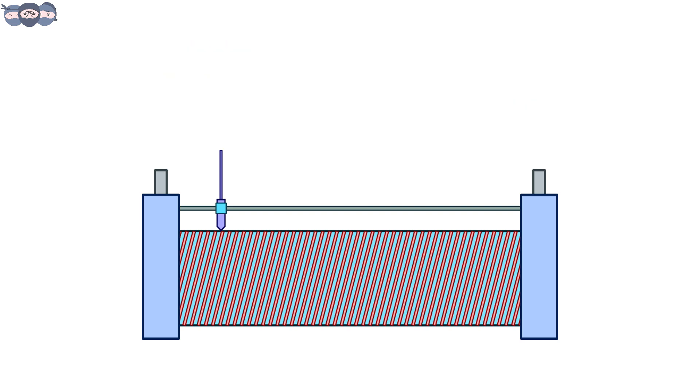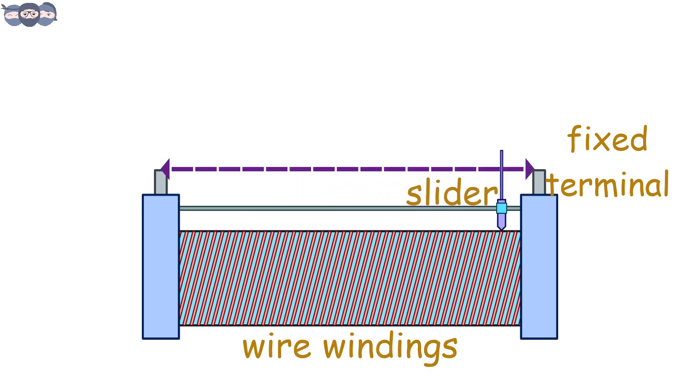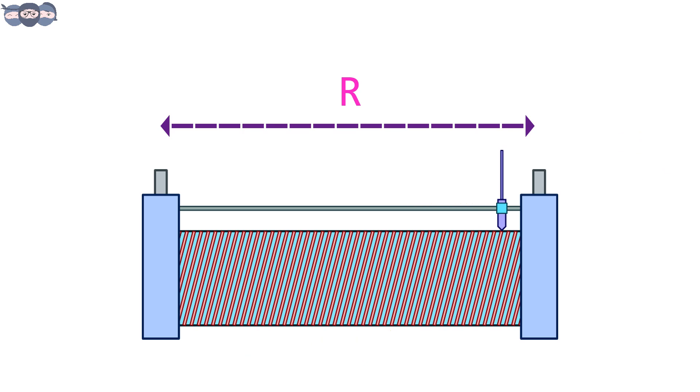A potentiometer has two fixed terminals and a slider which moves over the wire winding. The resistance between the end terminals is fixed. When resistance is measured between the slider and a fixed terminal, the value of resistance changes depending upon the position of the slider.